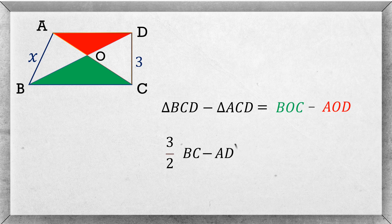For the right hand side, BOC is the area of the green and AOD is the area of the red. In the question we are given that the area of the green is 6 units more than the red. So from this equation we get BC minus AD equals 4.